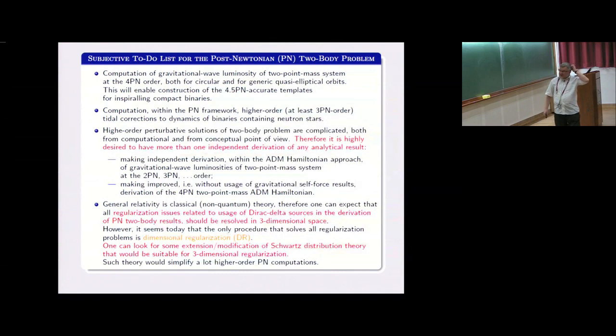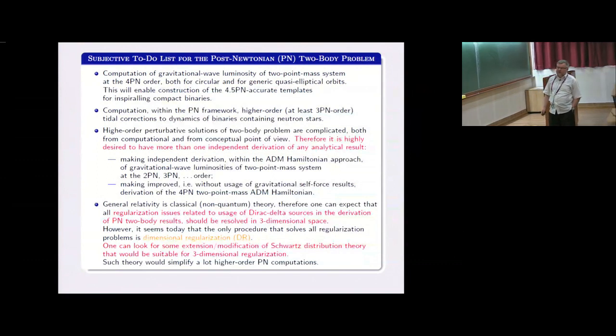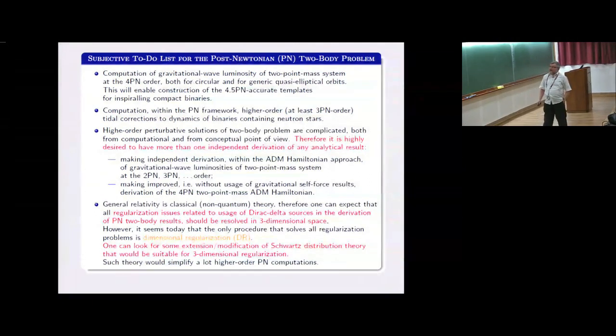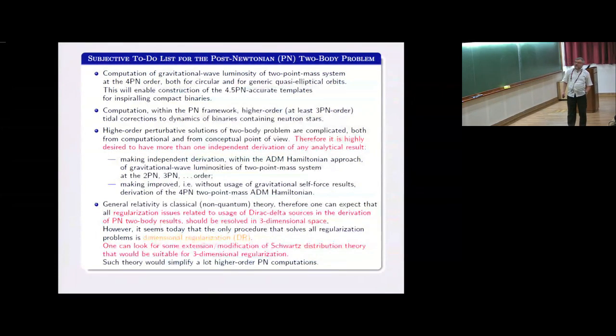The next two issues are less obvious and more technical, but I think they are quite important. The first one is related with the obvious fact that high-order perturbative solutions of a two-body problem are complicated, both from computational and conceptual points of view. The history of achieving analytical results is full of mistakes and wrong results, not counting misprints of course. Therefore, I think it's highly desired to have more than one independent derivation of any analytical result achieved.